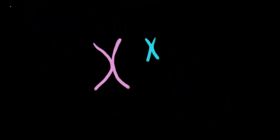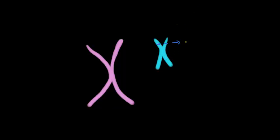A question you may have been thinking about is: does recombination happen between the sex chromosomes? Here we have our X chromosome and our smaller Y chromosome in blue. The SRY gene on the Y chromosome is basically responsible for the initiation of male sex determination in humans. If above a certain point these two chromatids swap material and recombine, we suddenly have on the X chromosome some of the Y chromosome including the SRY gene.